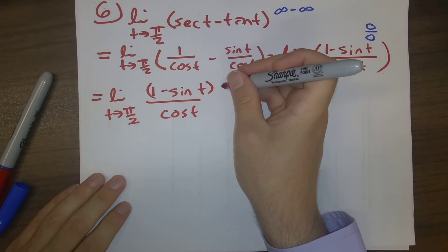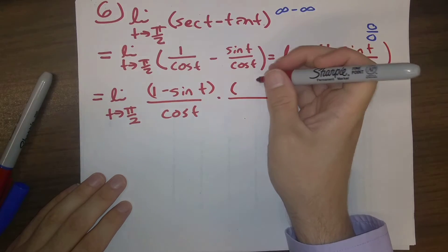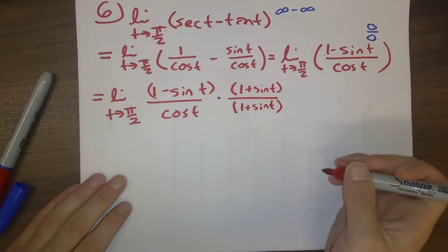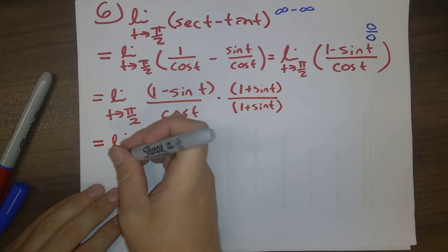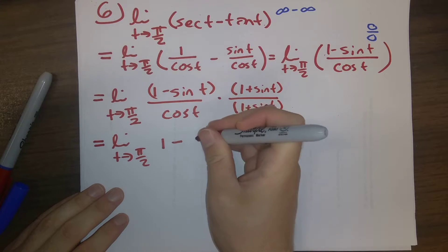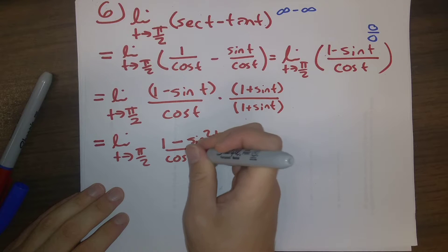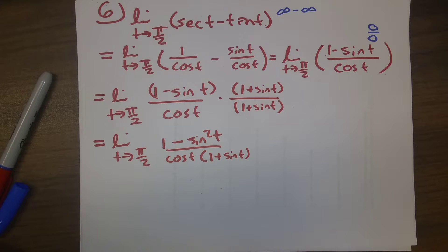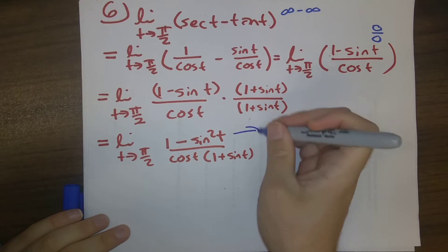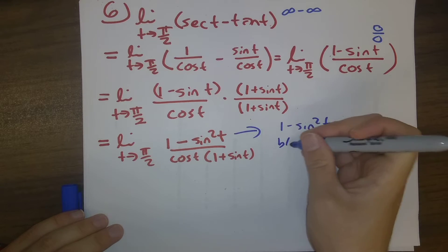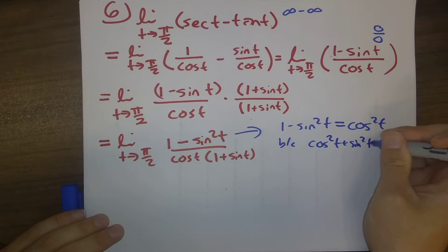We're going to multiply and divide by the same thing, and that same thing is going to be one plus sine t. When we do this, we end up with the numerator goes to one minus sine squared t over cosine t times one plus sine t. Why do we make this change? What's the advantage here? Well, the advantage lies in what is this numerator? One minus sine squared t is equal to cosine squared t because cosine squared t plus sine squared t is equal to one.